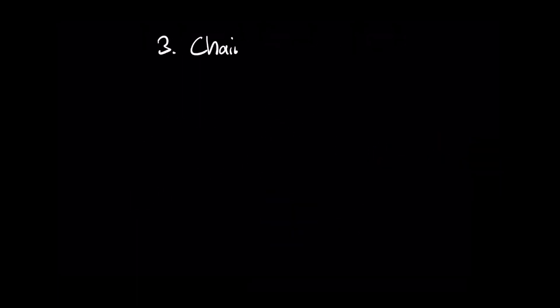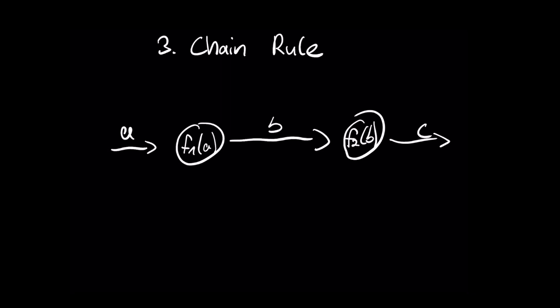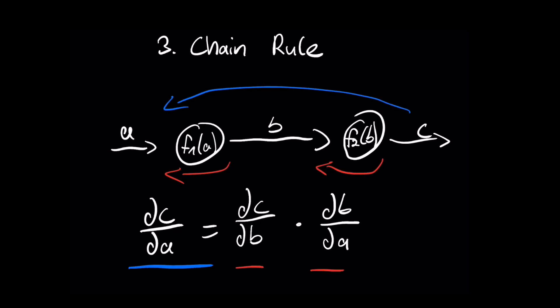The second concept we should know is the chain rule. This is a mathematical formula that is needed to calculate the gradients. Here we have a simple computational graph with an input a that gets transformed by the first node, giving output b, which in turn gets transformed by the second node to give output c. The chain rule says that the gradient of c with respect to a can be computed as the gradient of c with respect to b, times the gradient of b with respect to a. Don't worry — it's not that difficult when we look at a concrete example in a moment.